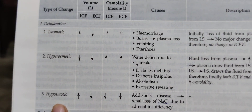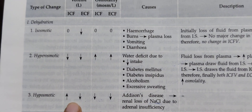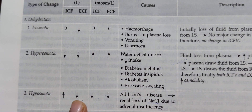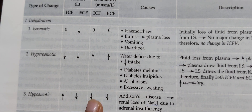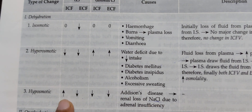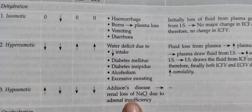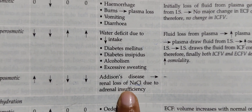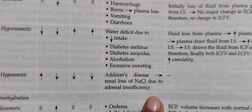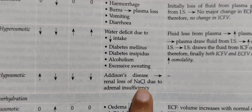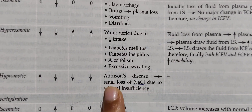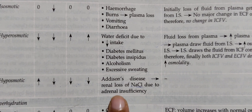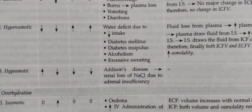In hypo-osmotic dehydration, the ECF volume decreases and osmolality of both compartments decreases, but ICF volume actually increases. This is seen in Addison's disease, where only solute is lost — specifically, renal loss of sodium chloride. When only solute is lost, the volume of intracellular fluid increases.